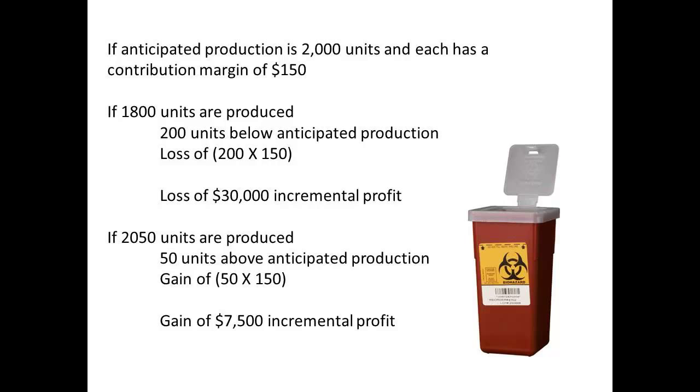If there is overproduction, say, of 50 units, then we have a gain of $7,500 of incremental profit.